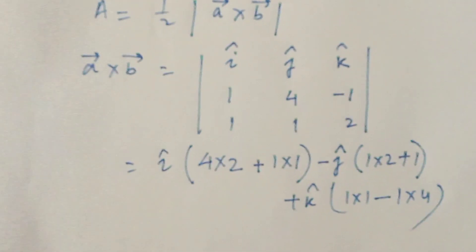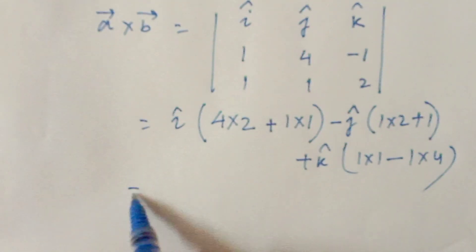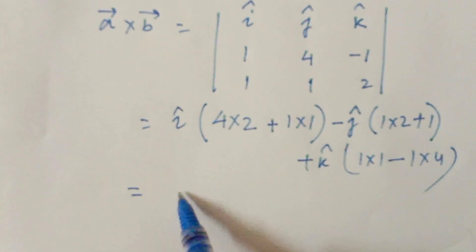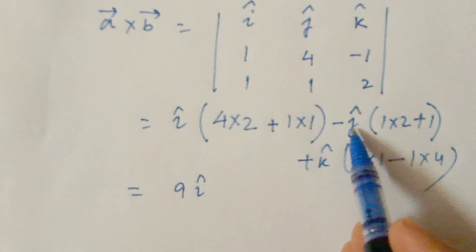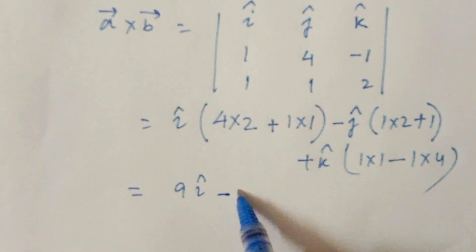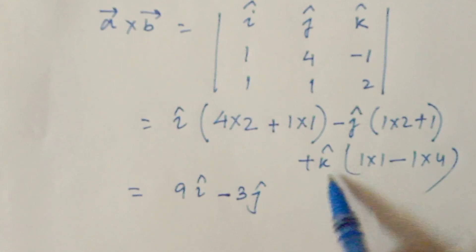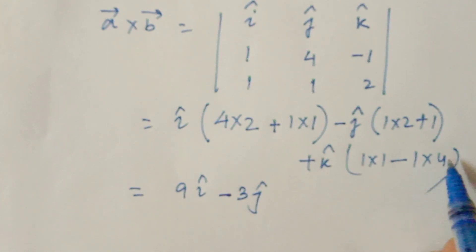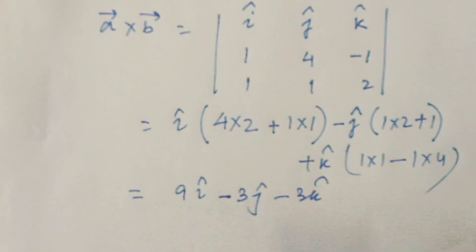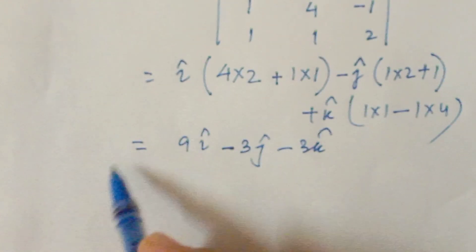Simplifying: for i, 4 times 2 is 8, plus 1 is 9, giving 9i. For j, 1 times 2 is 2, plus 1 is 3, so minus 3j. For k, 1 times 1 is 1, minus 4 is minus 3, giving minus 3k. So a cross b equals 9i minus 3j minus 3k.